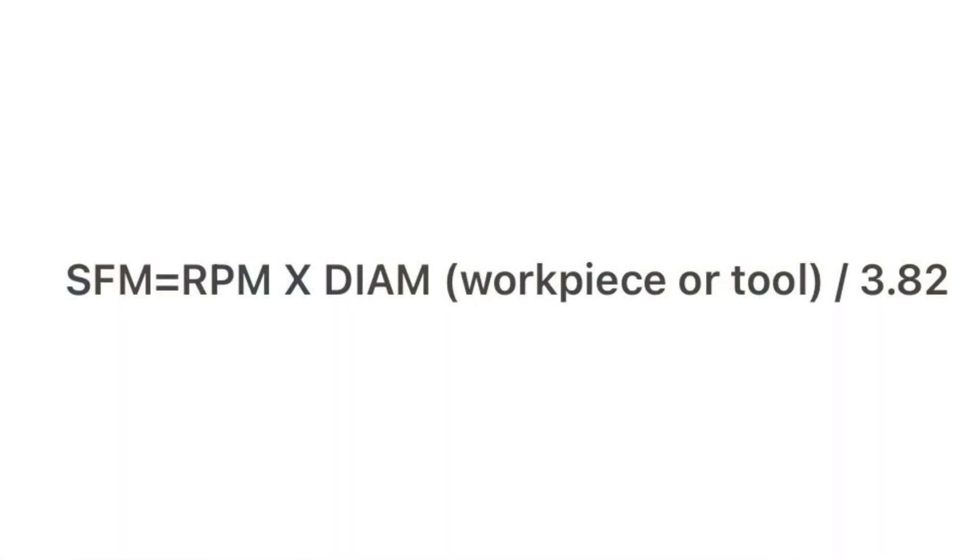To calculate your SFM, you're going to take your RPM times the diameter of your workpiece or your tool and divide it by 3.82. 3.82 is your constant. To calculate your RPM from a surface footage, you're going to take 3.82 times that recommended SFM and divide it by the diameter of your workpiece or your tool. Pause that, screenshot it, save it in your phone. Those formulas have been in my repertoire for a long time.